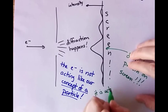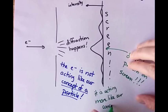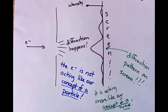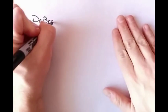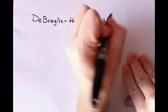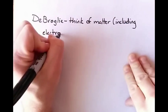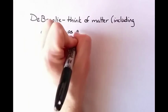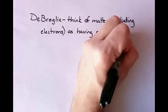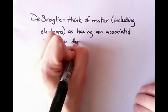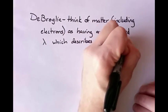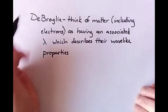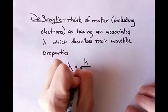So, this leads us to what we call the de Broglie hypothesis. De Broglie proposed that we think of the electron, and every other piece of matter, by the way. This is not confined to electrons. But he proposed that these electrons, or whatever we have, have an associated wavelength that describes their wave-like properties. When they behave like waves, they act like they have a certain wavelength. And that wavelength is equal to h over P.